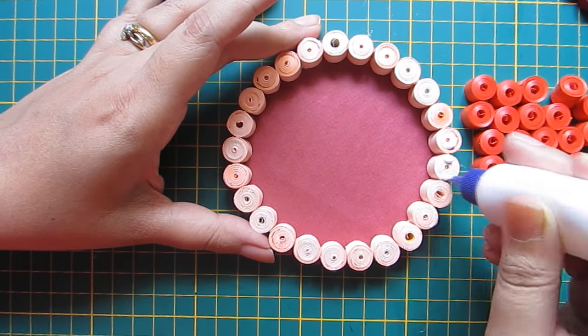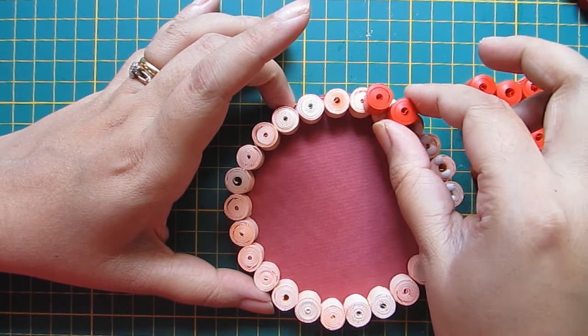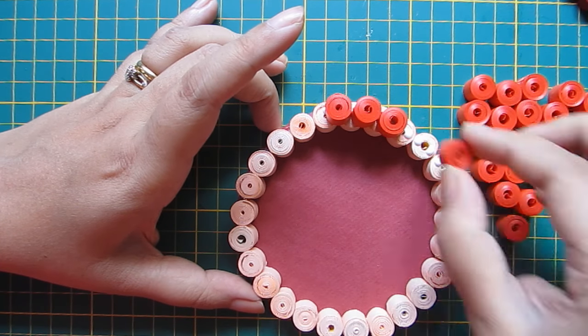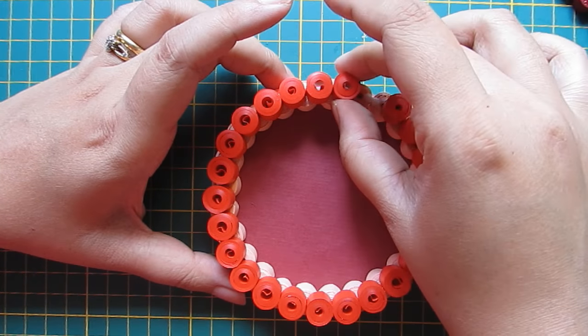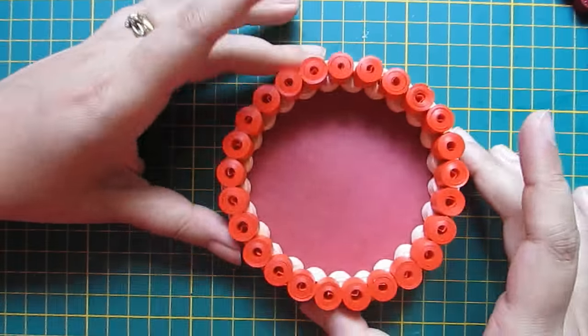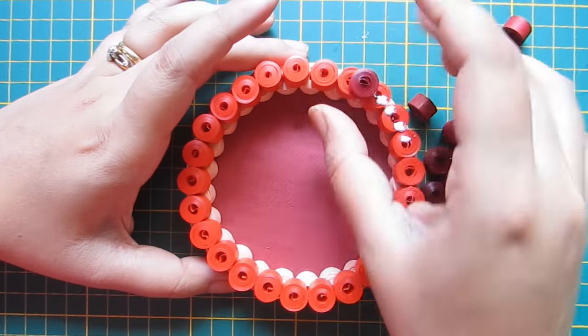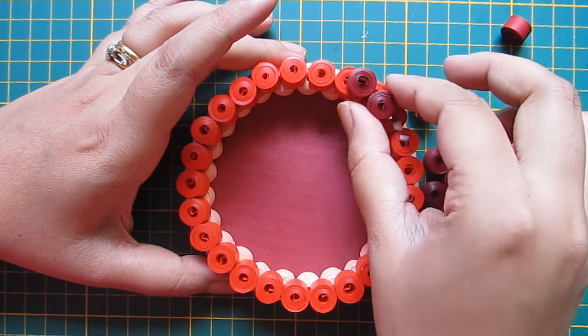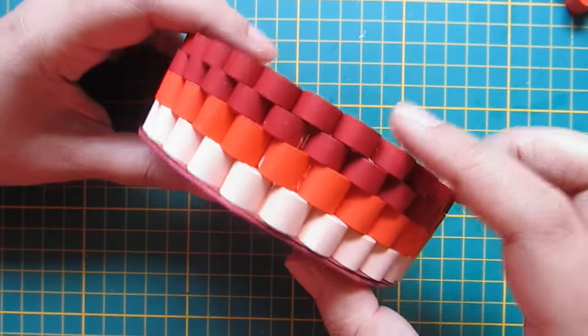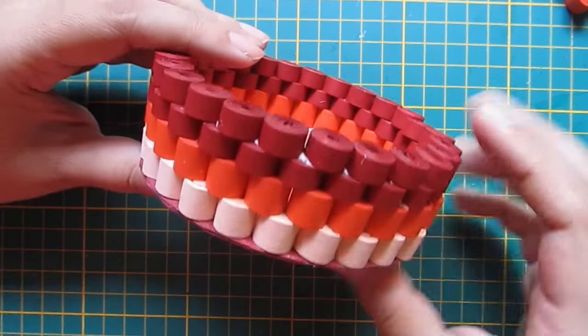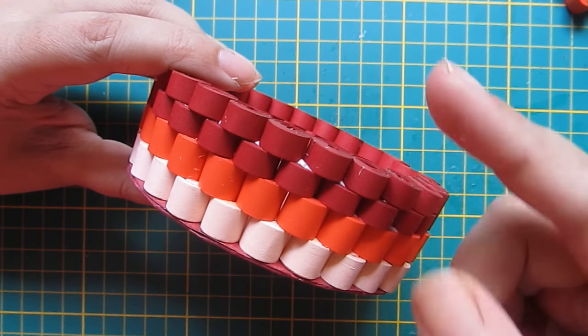Now for the second row I will add orange coils. Like this. Now for the third row I am adding maroon color coils. After adding two rows of maroon, the box will look like this. In similar manner I will add orange coils above that and after that I will add peach coils.